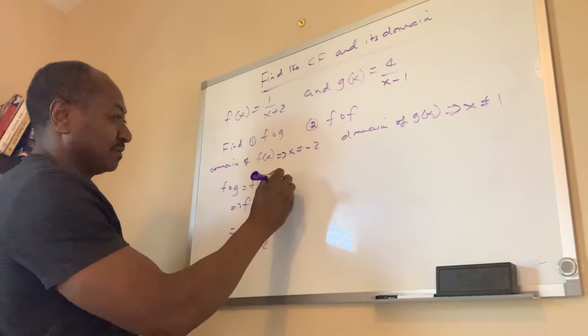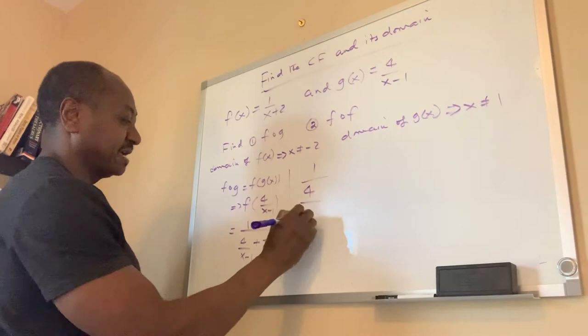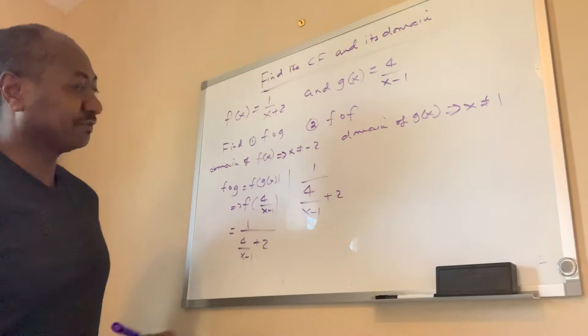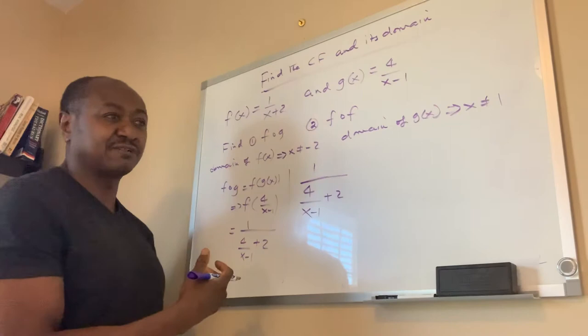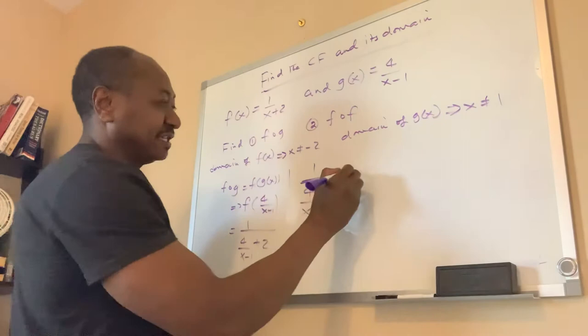So here we have to solve this: we have 1 over 4 divided by x minus 1, plus 2. How do you solve this? We call it a complex rational function. To solve this, you multiply the numerator and the denominator by the value x minus 1.